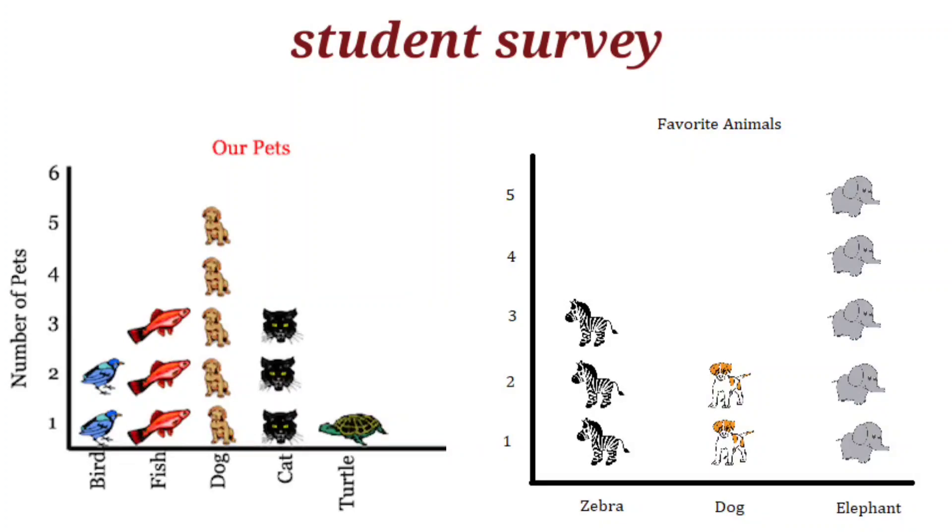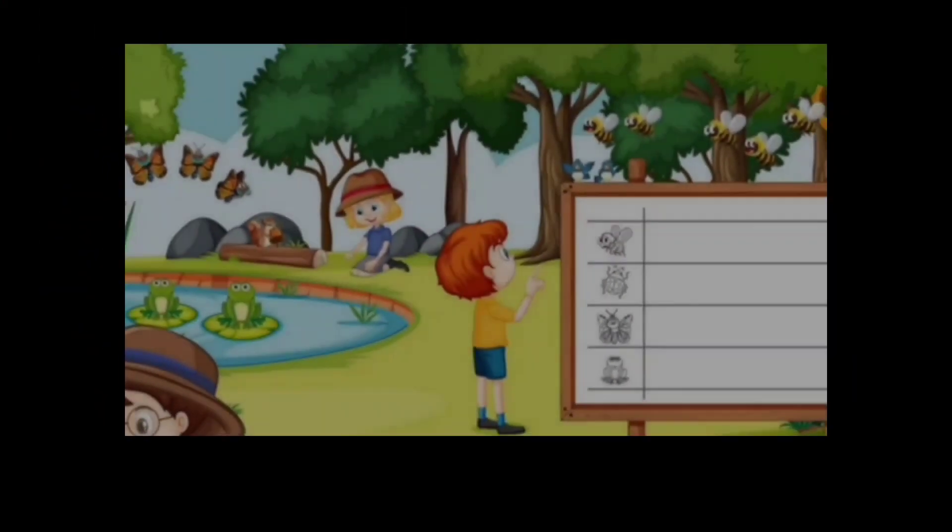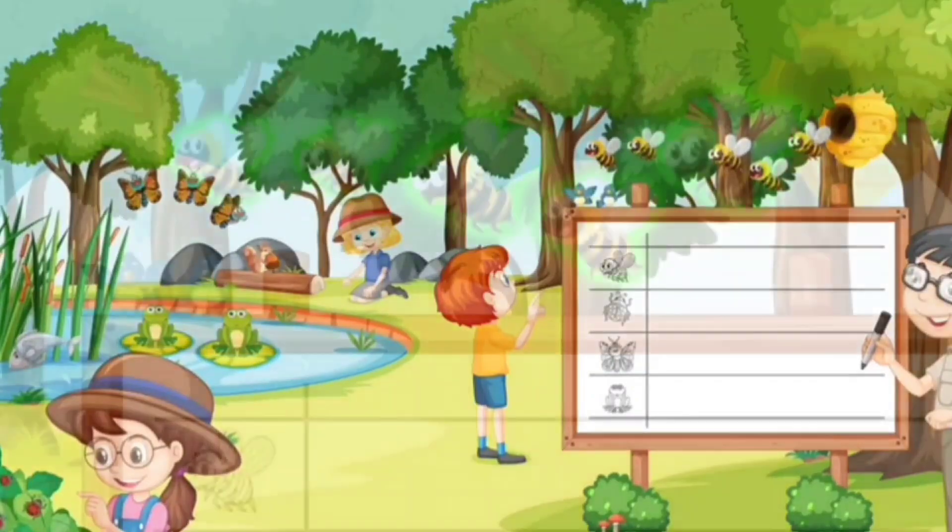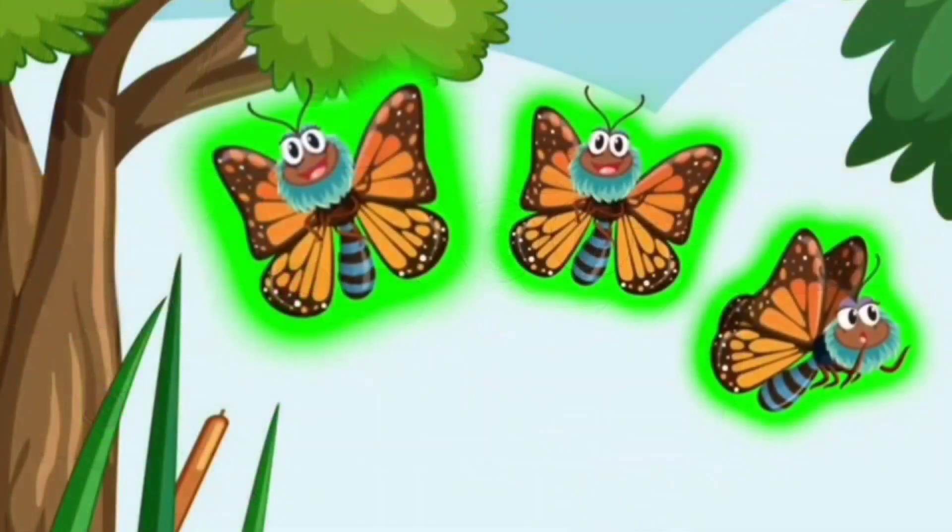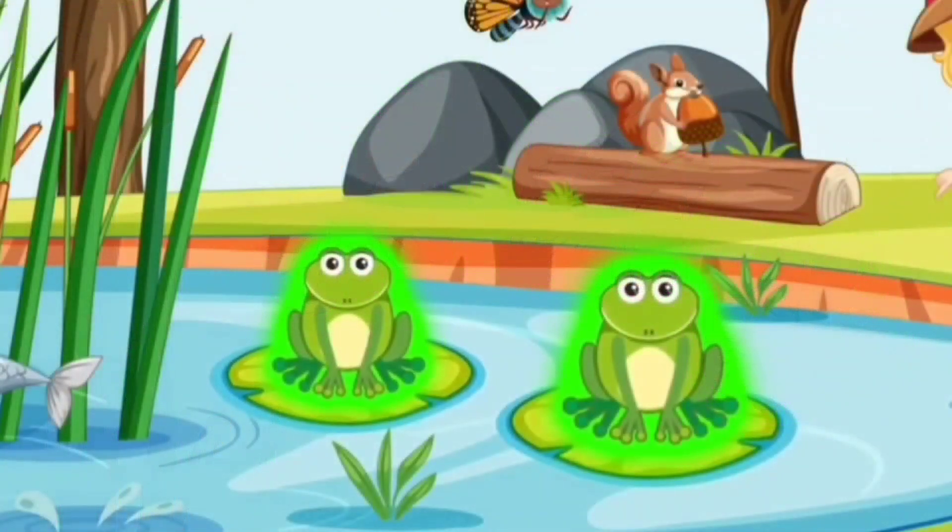Let us learn to draw a pictograph with the help of an example. Let us look around this garden. There are 5 bees, 6 ladybugs, 3 butterflies, and 2 frogs.